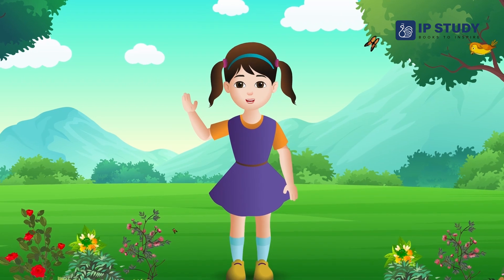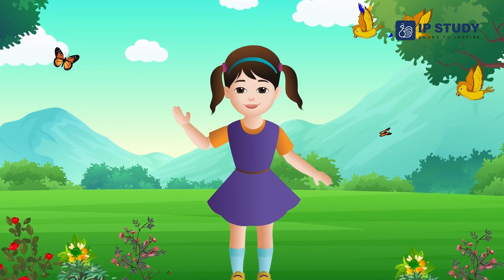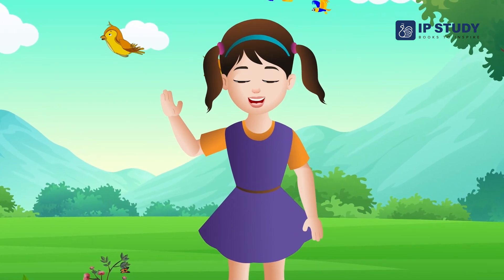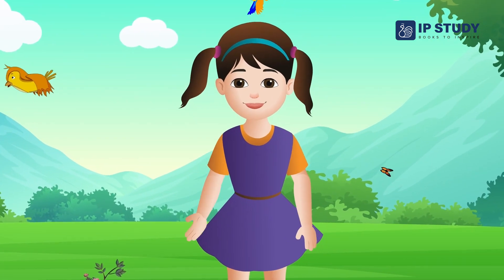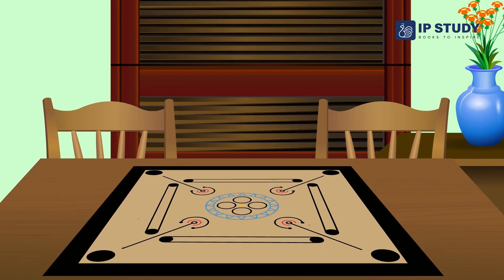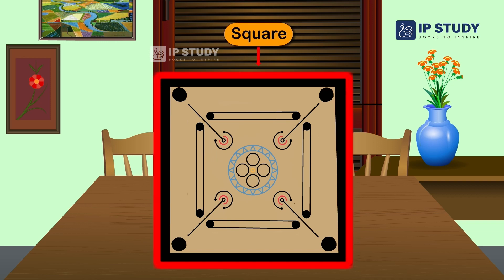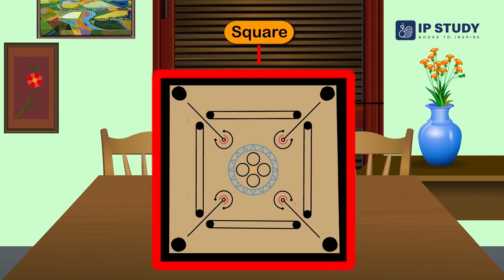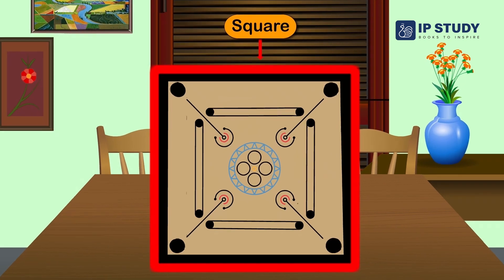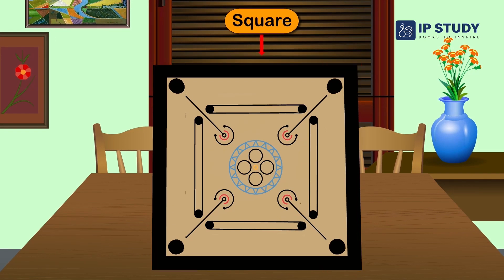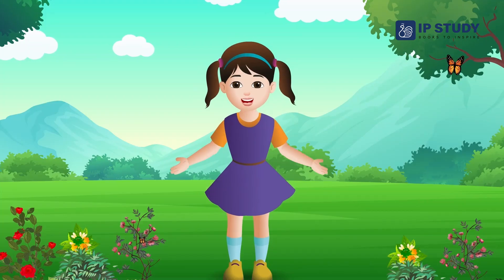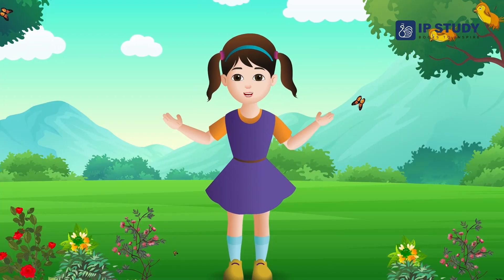Hello friends! Today we will learn about the square shape. Have you seen the carom board? What shape is it in? The carom board is in square shape. This shape has four equal sides and four corners.